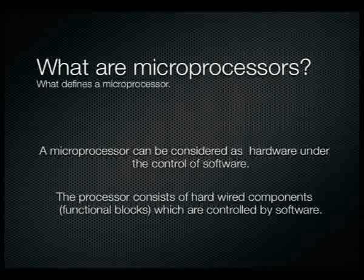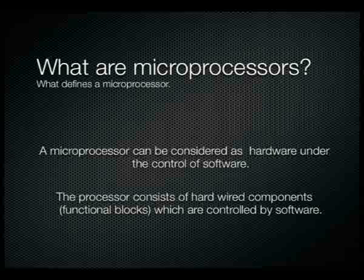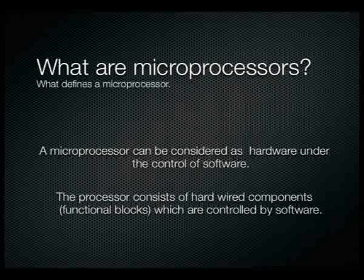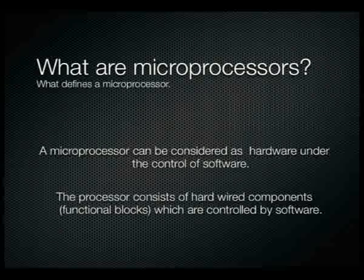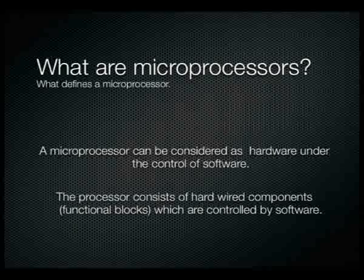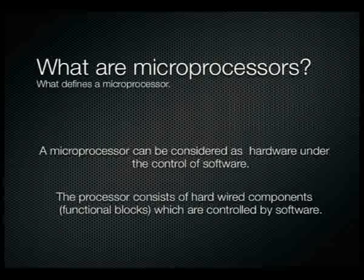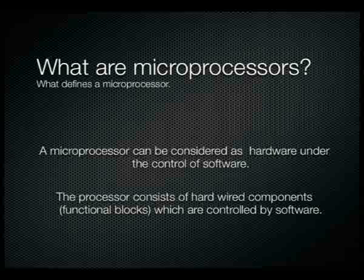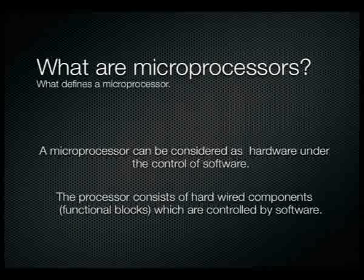A microprocessor is considered to be hardware under the control of software. It consists of numerous hardwired functional logic blocks — a series of little functional units each capable of doing a particular task. Depending on what the software tells it to do, one of those hardware functions will become active, or a particular sequence will activate to perform a task. Effectively, a microprocessor is a dumb set of logic functions controlled by software instructions that tell it what to do and when.